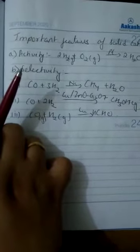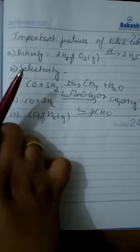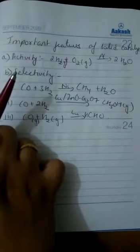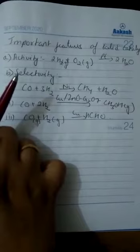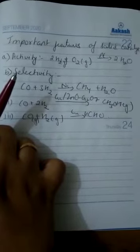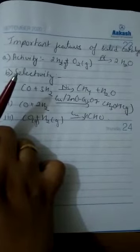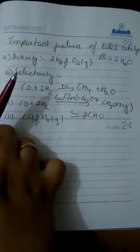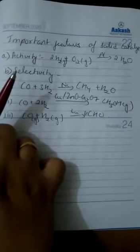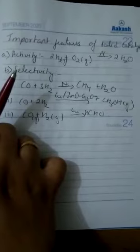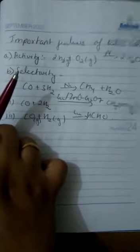The bonds between molecules getting attached to the catalyst should not be that much strong, otherwise it will not leave the surface and there will be no space for further reactions to take place. It has been found that for hydrogenation reactions, catalyst activity increases from group 5 to group 11 metals.